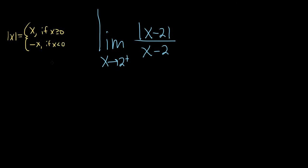So in this problem, we have the absolute value of x minus 2. We need to figure out if x minus 2 is bigger than 0 or smaller than 0. To do that, we can use this condition here. x is approaching 2 from the right.